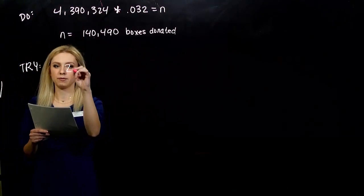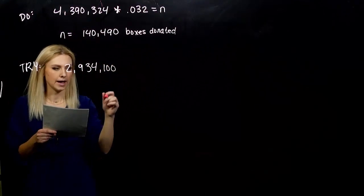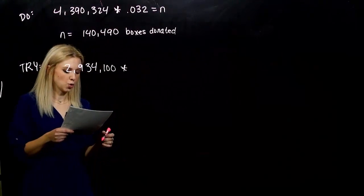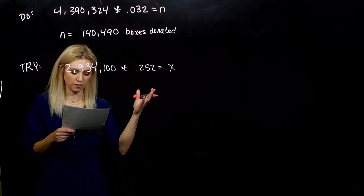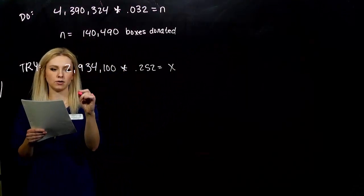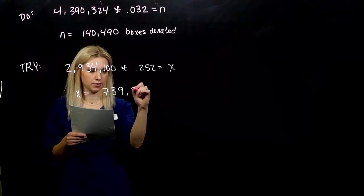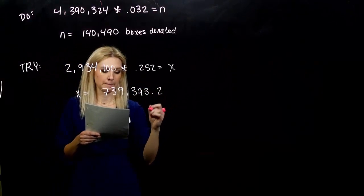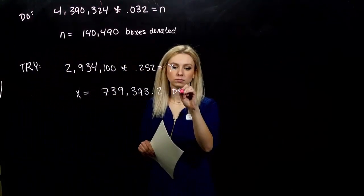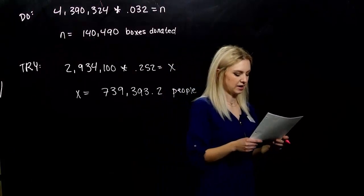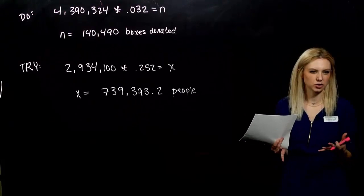So, set that up. So, we have our number of people. 2,934,100. And I'm trying to find 25.2% of that. So, 0.252 is some value X. If we do the multiplication and round, we get 739,393.2 people. But, what really happens in this case? Can we have 0.2 of a person? Not really. That's why they're telling us to round.